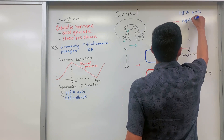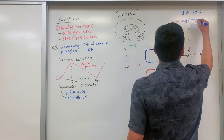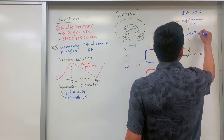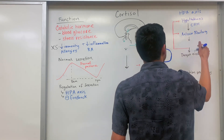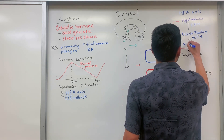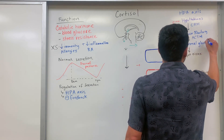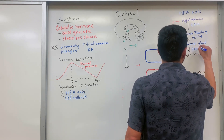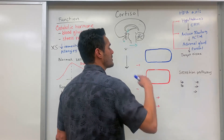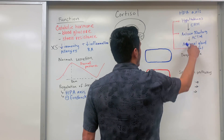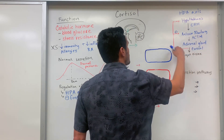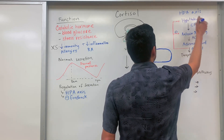The hypothalamus will secrete something specific known as corticotropin-releasing hormone, and from there it'll get into the anterior pituitary gland. From the anterior pituitary gland we release something known as adrenocorticotropic hormone (ACTH). From there it travels to the adrenal gland, where cortisol is released and travels to its target tissue. The negative feedback mechanism works so that once cortisol reaches adequate levels, it will inhibit the release of ACTH at the anterior pituitary and also inhibit the release of corticotropin-releasing hormone by the hypothalamus.